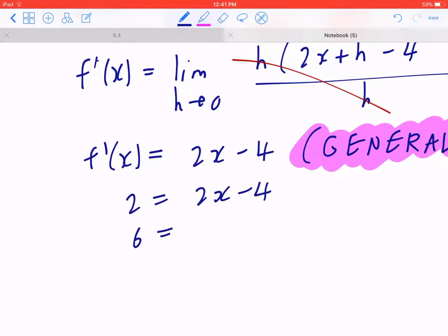When you bring negative 4 to the left, that's 2 plus 4, which is going to be 6. The opposite of multiplying by 2 is to divide by 2, so x is going to be 3.